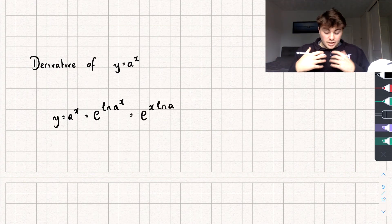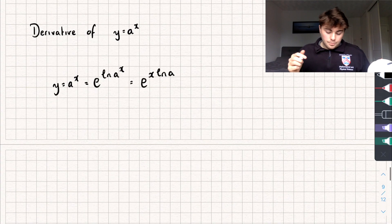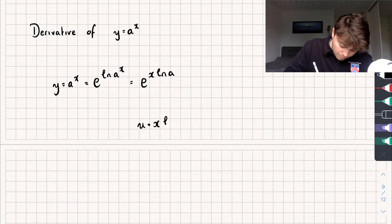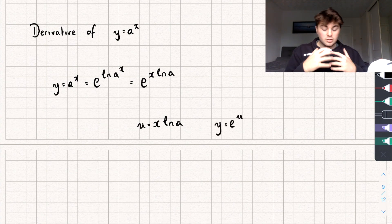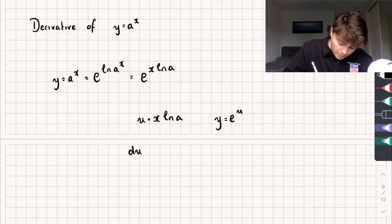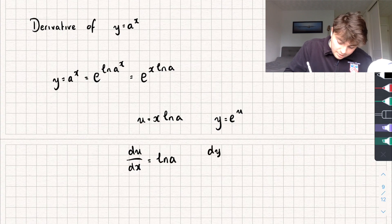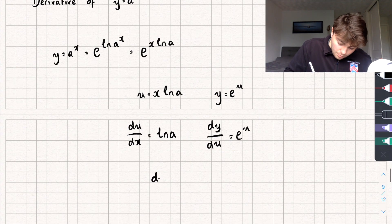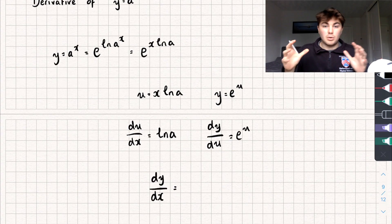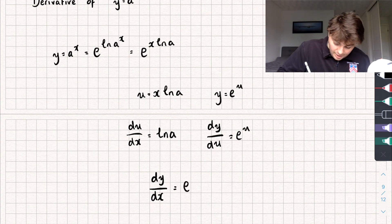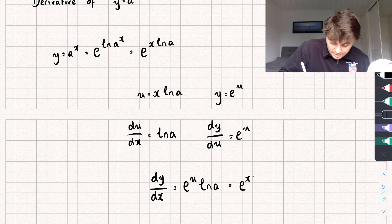Now, because I've done that, I can actually differentiate this using the chain rule. So we're going to get that u is equal to x multiplied by the natural log of a, and y is equal to e to the u. Differentiating u with respect to x, we get du/dx is equal to just the natural log of a. And then dy/du is just equal to e to the u. So finally, dy/dx is going to be these two things multiplied together, giving us e to the u multiplied by the natural log of a, which is e to the x natural log of a multiplied by the natural log of a.